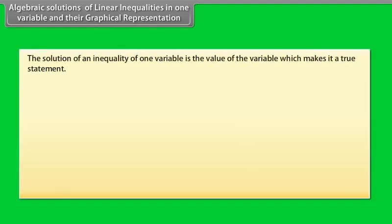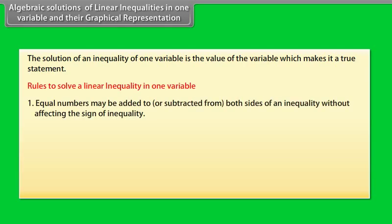Algebraic solution of linear inequalities in one variable and their graphical representation. The solution of an inequality of one variable is the value of the variable which makes it a true statement. Rules to solve a linear inequality in one variable. Rule 1: Equal numbers may be added to or subtracted from both sides of an inequality without affecting the sign of inequality.